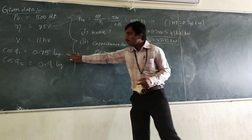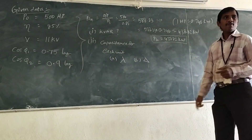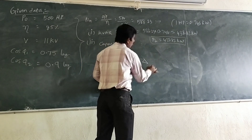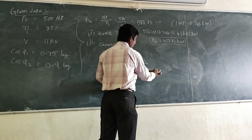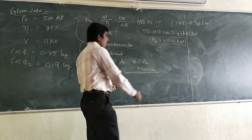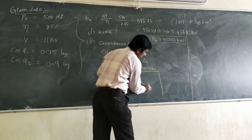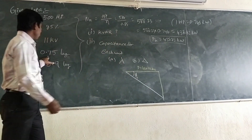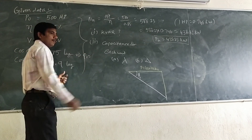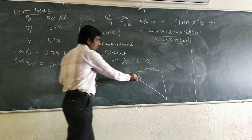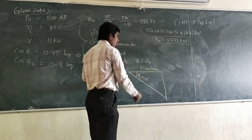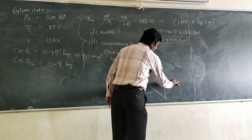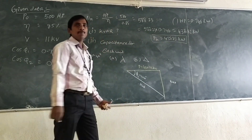To improve the power factor from φ₁ to φ₂, we use the formula: P × (tanφ₁ − tanφ₂). Drawing the power triangle: P equals 438.82 kW. The initial power factor cosφ₁ equals 0.75, so φ₁ equals 41.40 degrees. The improved power factor cosφ₂ equals 0.9, so φ₂ equals 25.84 degrees. The power triangle has sides P (kW), kVA, and kVAR.